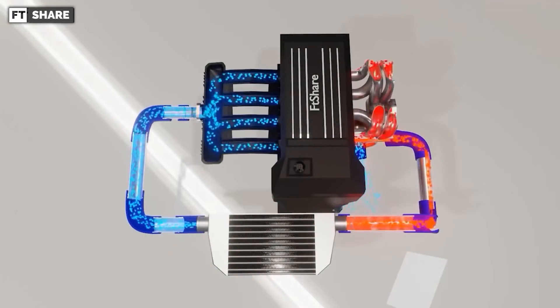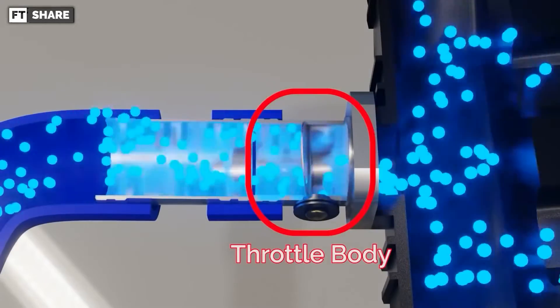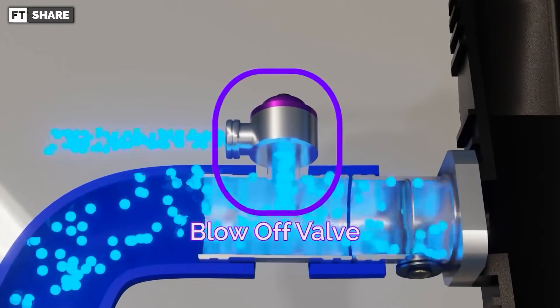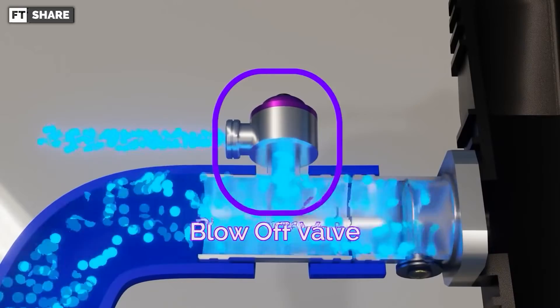Finally, when we want to slow down and release gas, the throttle body closes, and the excess high-pressure air before the intake manifold and intercooler is released to the atmosphere through the blow-off valve.